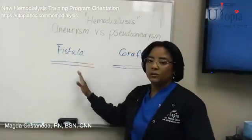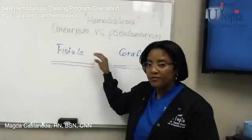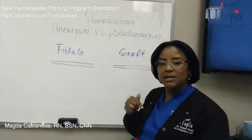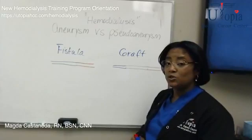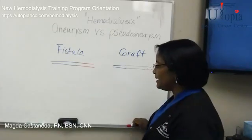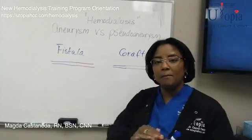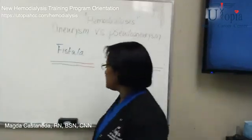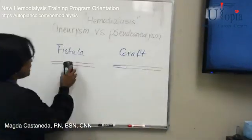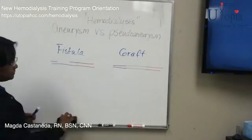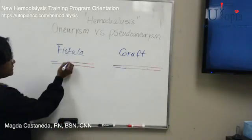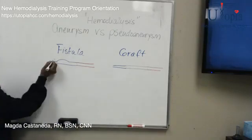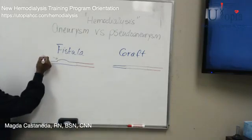In the fistula, aneurysm is related to fistulas. We call it an aneurysm in hemodialysis when it happens to a fistula. An aneurysm is a ballooning — a ballooning of the vessel. So an aneurysm would look something like a balloon on the vessel.